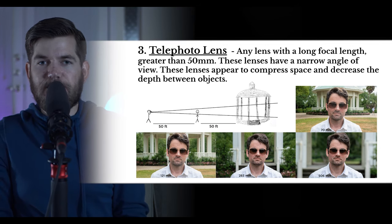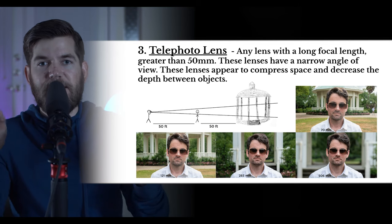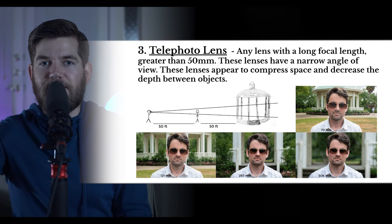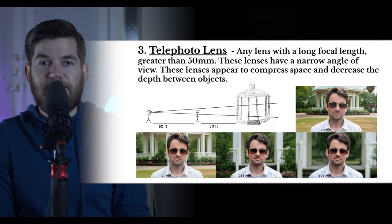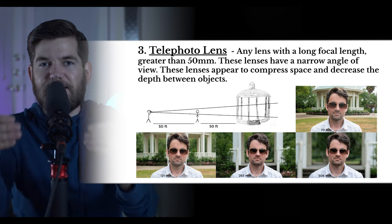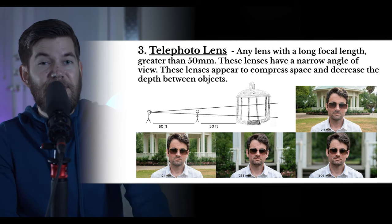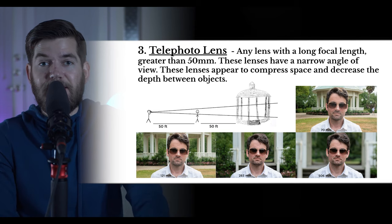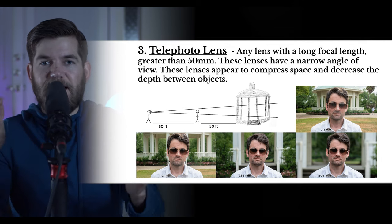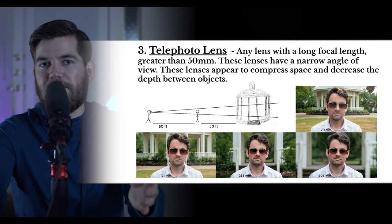Starting closer to normal at 70mm, both the man and the gazebo are visible. As the millimeter count goes up further into telephoto and super telephoto, you can see the distance between the man and the gazebo appears to compress. At the 500mm example, he appears to be very close to that gazebo that we once couldn't even see with the wide-angle lens. These lenses appear to compress space not just because of the lens, but because of the distance that lens choice forces you to operate from.